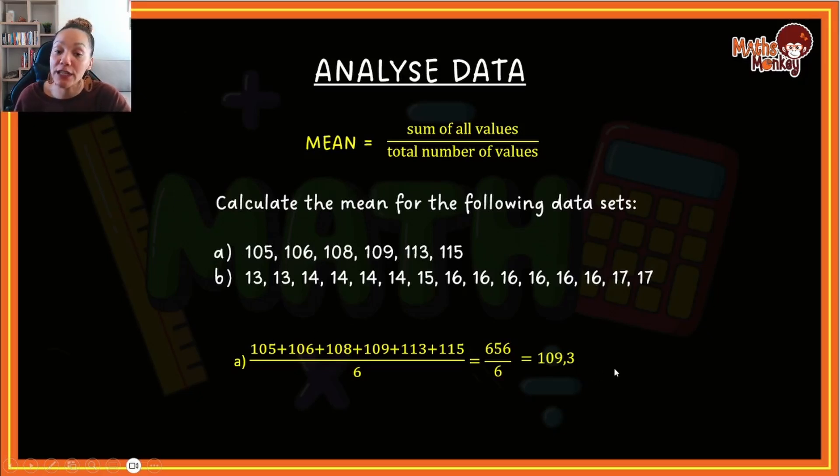Let's look at B. Again we're calculating the mean, so we're calculating the average. We're adding all the values together, so I've got two 13s, four 14s, one 15, six 16s, and two 17s. I could say 13 times 2 plus 14 times 4 plus 15 plus 16 times 6, however many times these values appear.